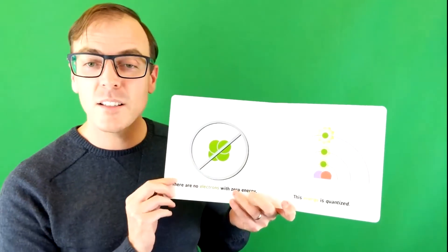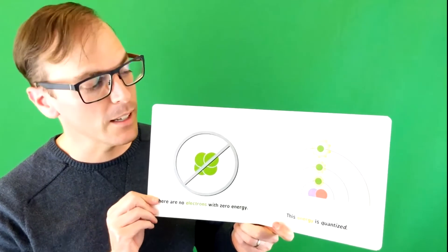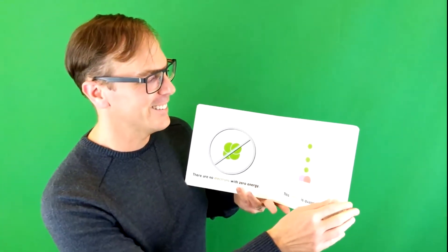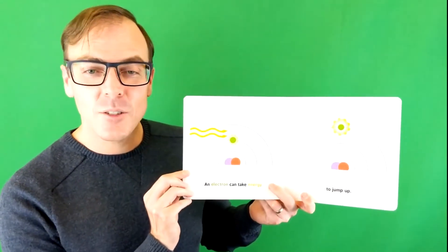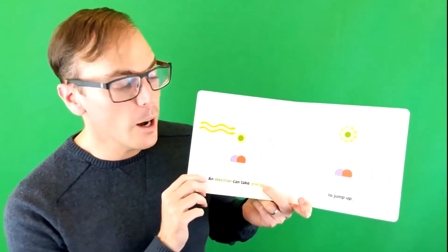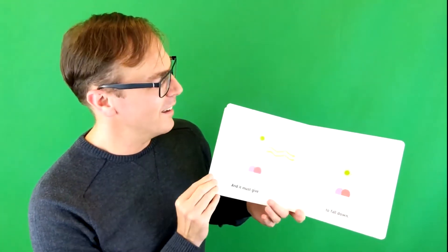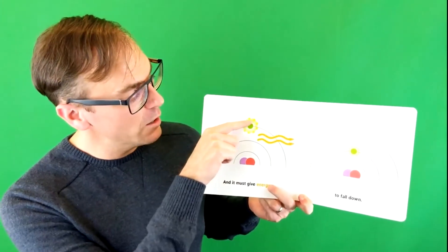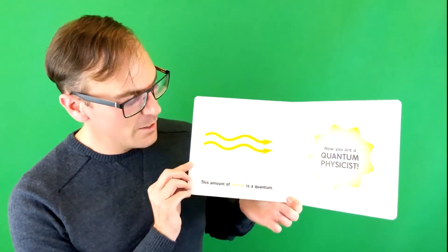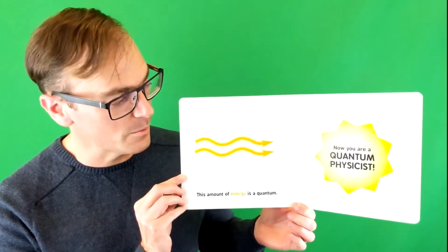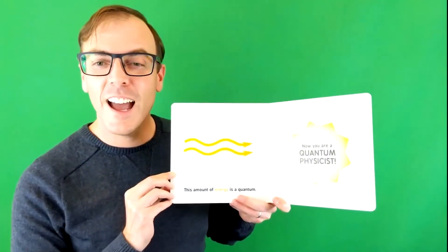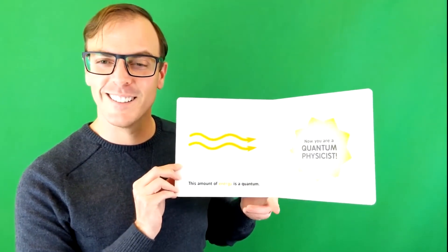The energy is quantized. Now, I want everyone to say that with me. Energy is quantized. Very good. An electron can take energy to jump up and it must give energy to fall down. This amount of energy is a quantum. Can you point to the energy? Point to the quantum of energy. Just touch it on your screen. Very good. Now you are a quantum physicist. The end.